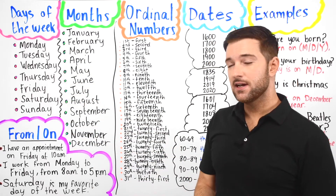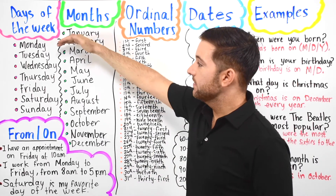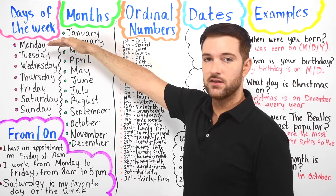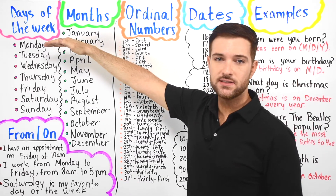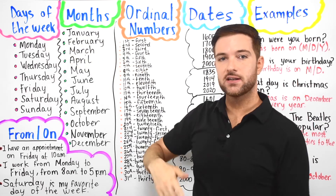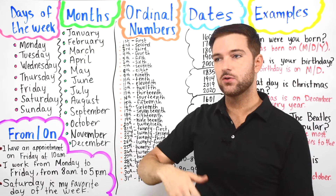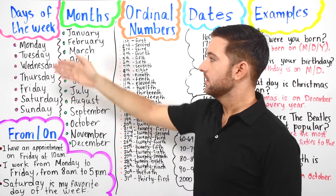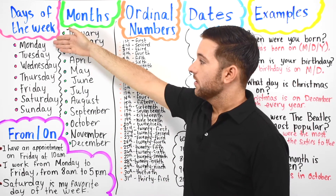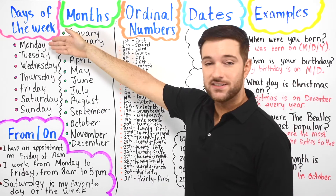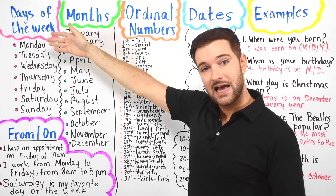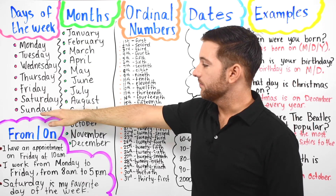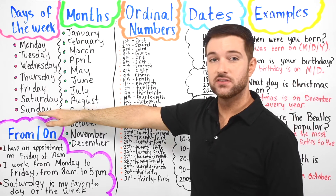In the United States, most people begin the week with Monday. This is because this is the day when people go back to work, go back to school — everything begins on Monday. Oftentimes on the calendar, you'll see the day of the week starts with Sunday.